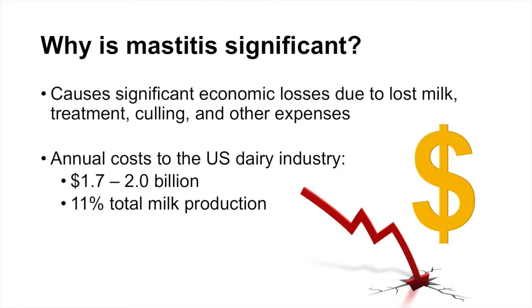The estimated annual cost to the U.S. dairy industry is between $1.7 and $2 billion every single year, which is a huge amount of money that the industry continues to spend to try to reduce, prevent, and treat cows that have mastitis.